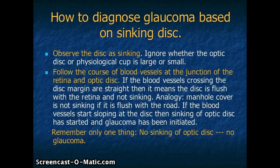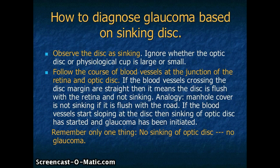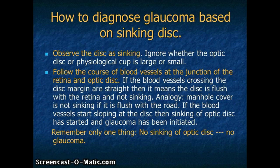Now we come to our main subject: how to diagnose glaucoma based on sinking disc. It will be quite simple and straightforward — just determine one thing: whether the optic disc is sinking or not. Ignore whether the optic disc or its cup is large or small. Just follow the course of blood vessels at the junction of the retina and the optic disc. If the blood vessels crossing the disc margin are straight, the disc is flush with the retina and is not sinking. If the blood vessels appear sloping on the disc, then sinking of the disc has started and glaucoma has been initiated. Remember: if there is no sinking of the optic disc, then there is no glaucoma.